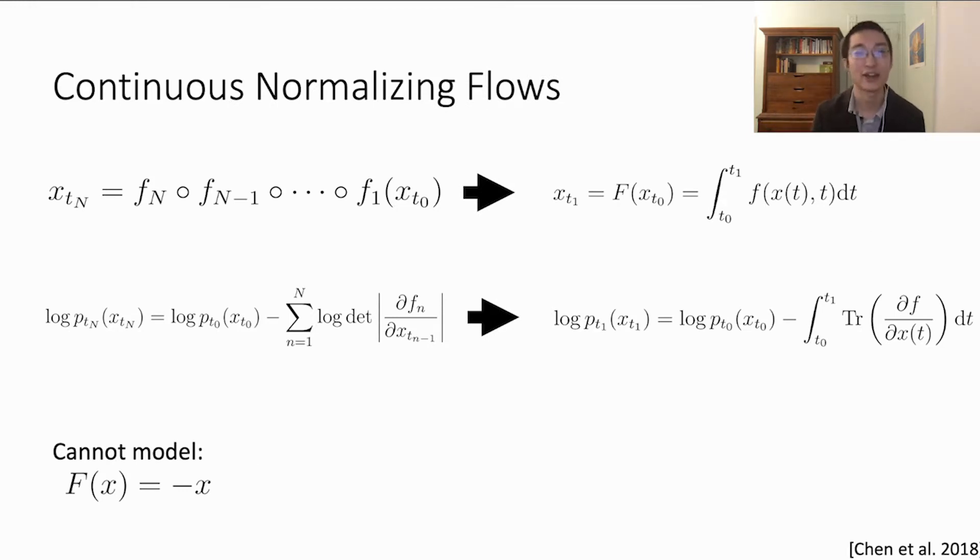As presented in Chen et al.'s paper Neural ODE, continuous normalizing flows take the number of layers to the limit, directly modeling the derivative of the flow and integrating this derivative using standard numerical methods for solving ordinary differential equations to solve for x at time t1. There are two useful side effects of taking the number of layers to the limit. The first is that the log determinant computation simplifies to a trace of the Jacobian, simplifying things computationally, although the integration time still dominates.